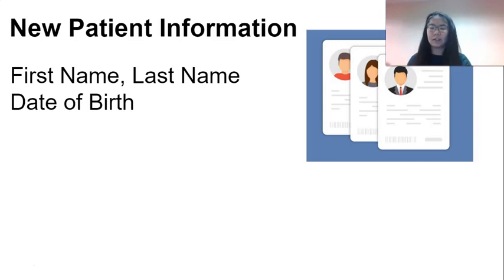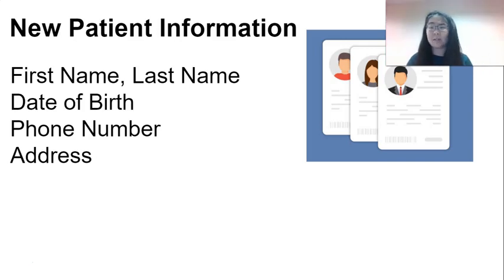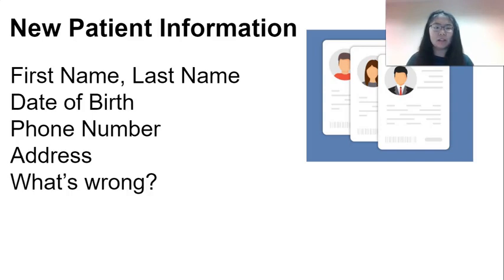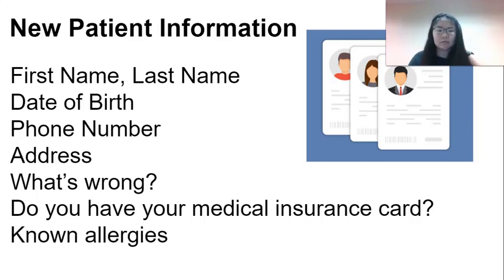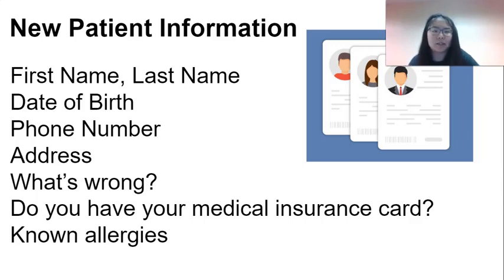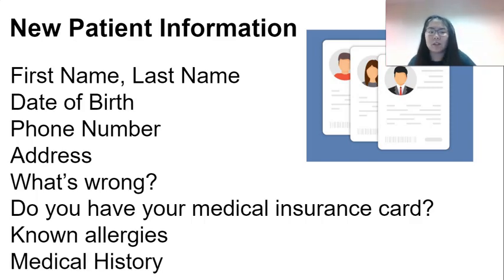They'll ask for your date of birth — your birthday: month, day, year. Your phone number including the area code. Your address — your street address, where you live, where they can send you mail. A lot of times this has to do with billing. Being able to describe what's wrong. Do you have your medical insurance card? Any known allergies — anything you know you are allergic to. And your medical history.